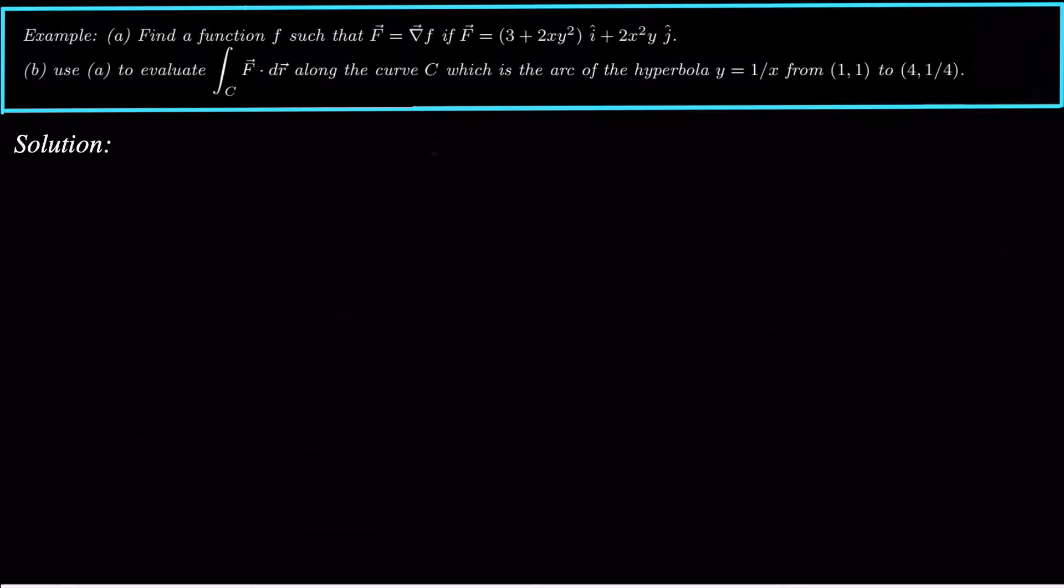And then part b we want to use that to evaluate the line integral along the curve C, which is the arc of the parabola y equals 1 over x from 1,1 to 4, 1 over 4. So to do this, first of all, we have to know what is the gradient. So part a.